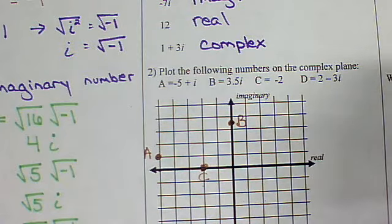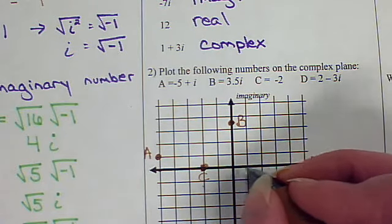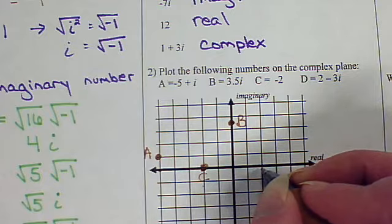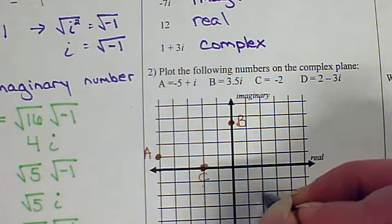2 minus 3i. 2 into the real and negative 3 imaginary. 1, 2, 3.